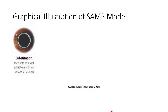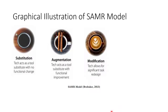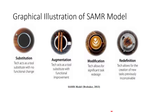With augmentation, the technology acts as a tool substitute with functional improvements — yes, it's a tool, but you now have some improvements on it. Then with modification, technology allows for significant task redesign, so there is a noticeable change. The final descriptor is redefinition: a total change where technology allows for the creation of new tasks previously inconceivable.